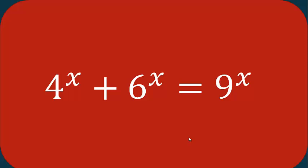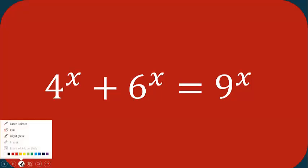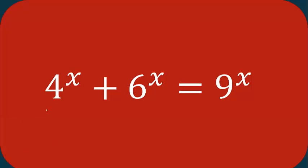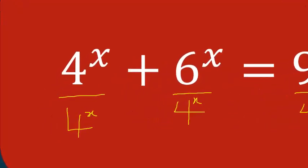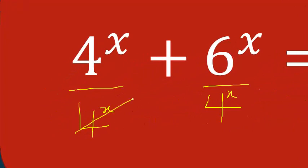This is the question. Now to solve this question, first of all we have to divide through by the first term, that is 4 to the power x. So 4^x divided by 4^x, and 6^x divided by 4^x.